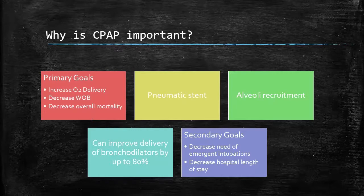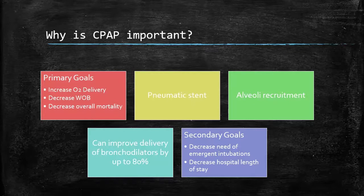Another great thing CPAP does is improve the delivery of bronchodilators by 80%. By the time we get called to a patient's house who has COPD or asthma, typically they call because the difficulty breathing has increased. They've already taken their inhaler, already done their nebulizers probably all day, and it's just not working. The reason it's not working is because they are so tight — those passages are so tight that any medication they try to inhale isn't getting to where it needs to be. If we can apply CPAP to force those passages open and then give them medication to inhale, that's going to be a lot better for this patient.